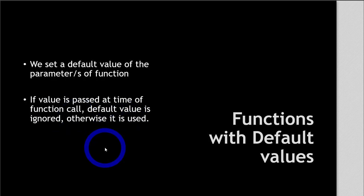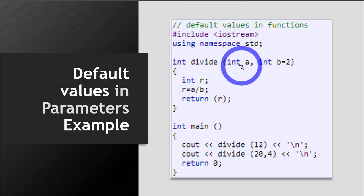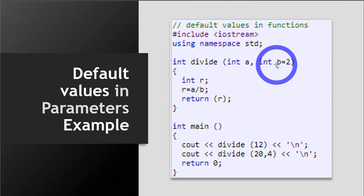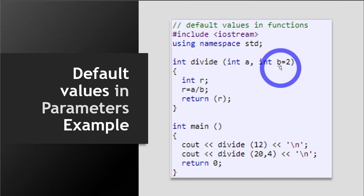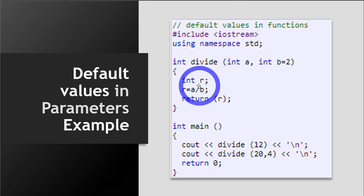Let's see an example to better understand. This is a function called divide and it is taking two parameters: the first one is a, and the second one is b — both are integer parameters. The second parameter b is made a default parameter; we have assigned it a value of two by default. So in case a value for this parameter is not passed, two will be used. The function has a third variable r, divides a by b, and then returns the variable r.